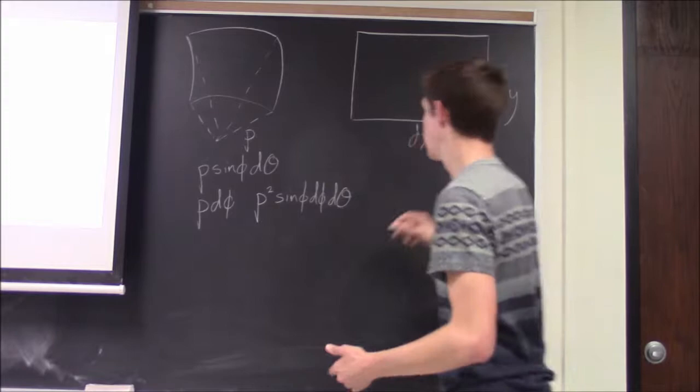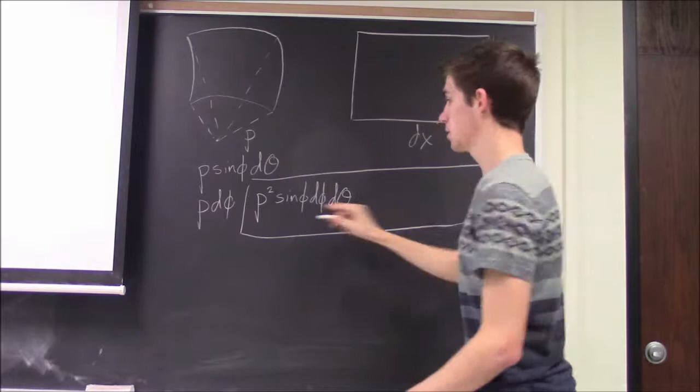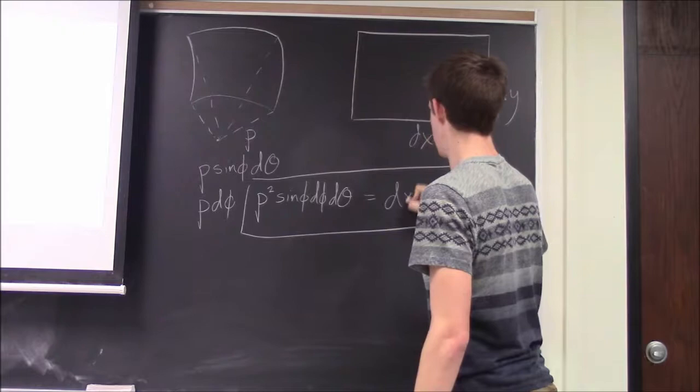So typically, you end up with a distortion factor such that rho squared sine phi d phi d theta equals dx dy.